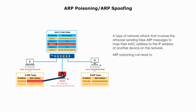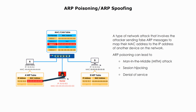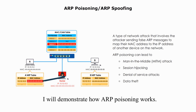ARP poisoning can be used to carry out several types of attacks, including man-in-the-middle attacks, session hijacking, denial-of-service attacks, and data theft. I will demonstrate how ARP poisoning works.